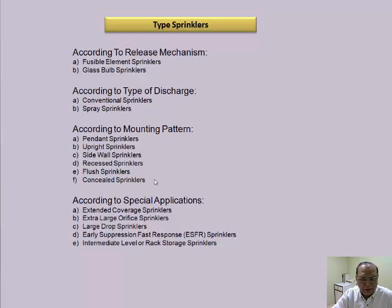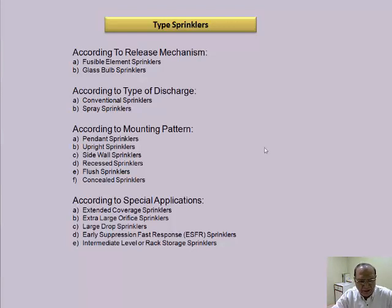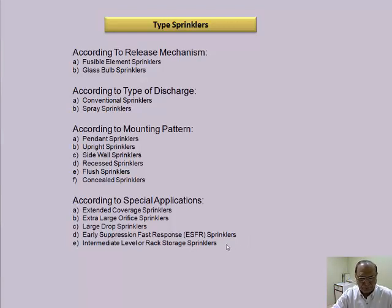These are also shown in the oncoming slides where you can visualize how they look. Sprinkler types for special applications include extended coverage sprinklers, extra large orifice sprinklers, large drop sprinklers, early suppression sprinklers, and extra large intermediate level or rack sprinklers. These types are used for special applications like storage areas, different kinds of surfaces, etc.